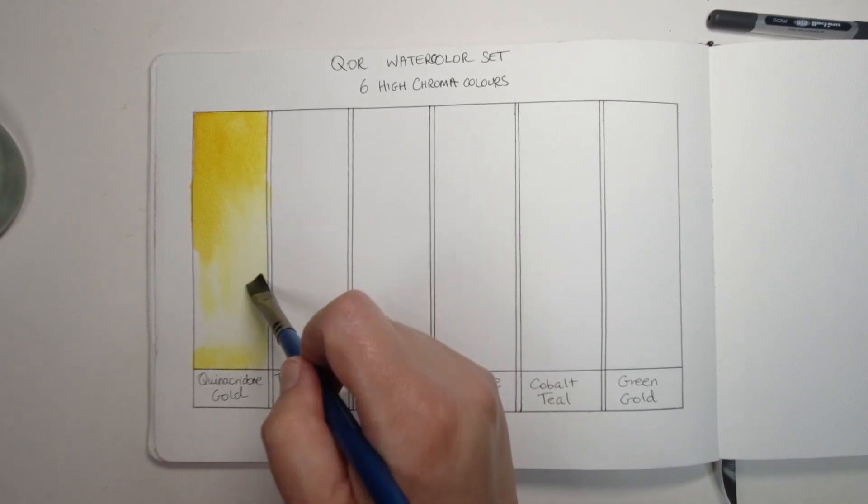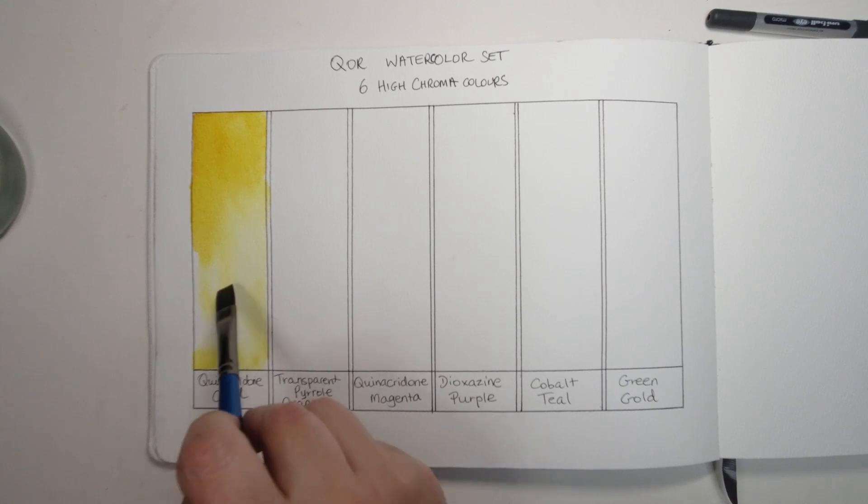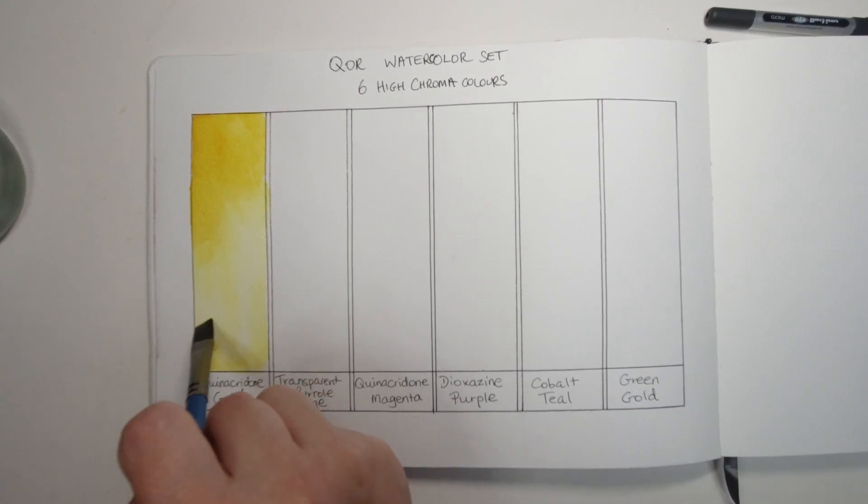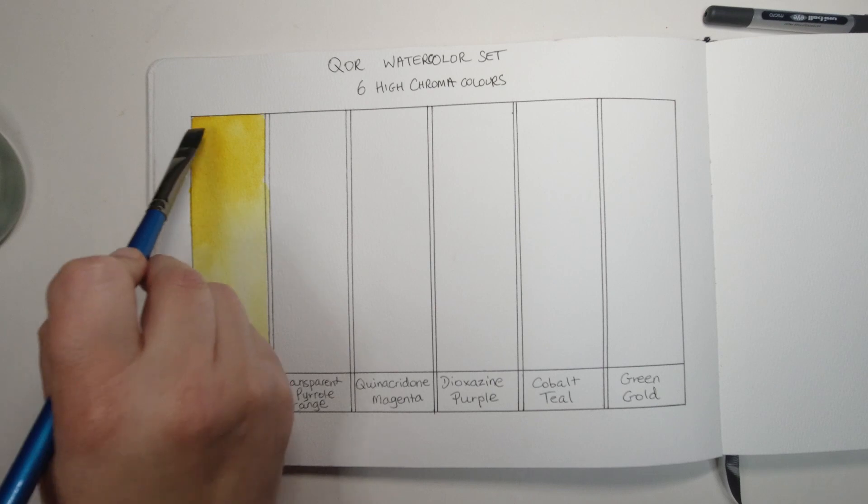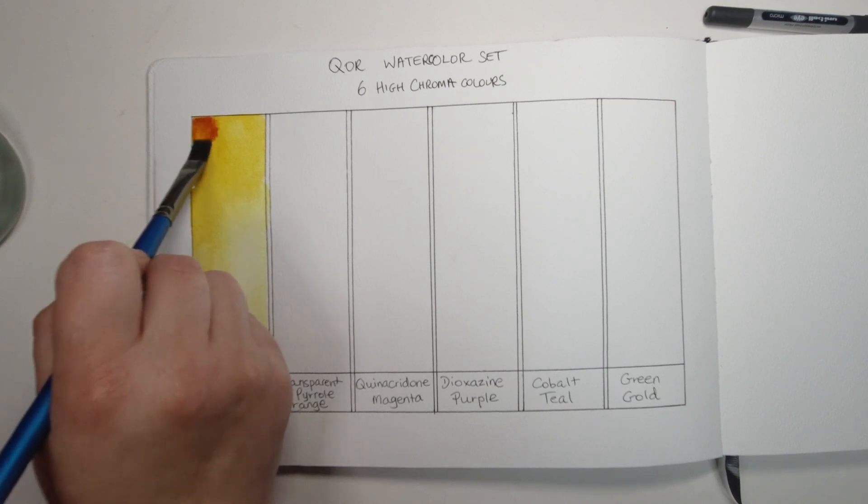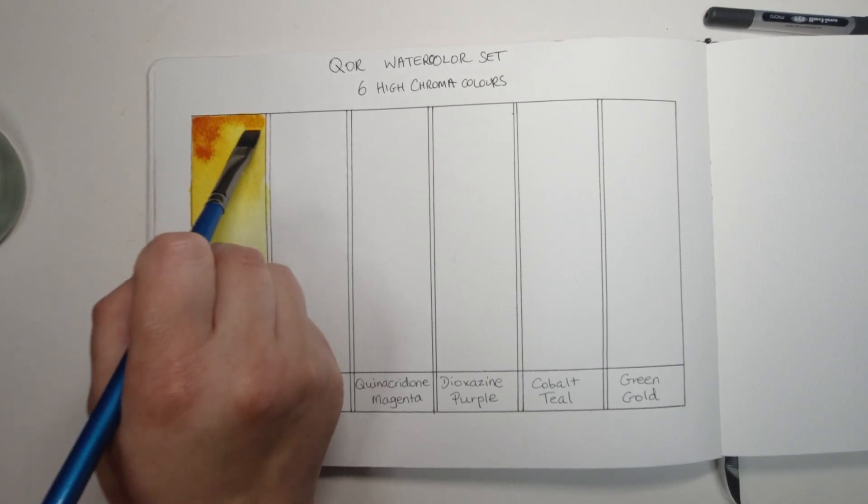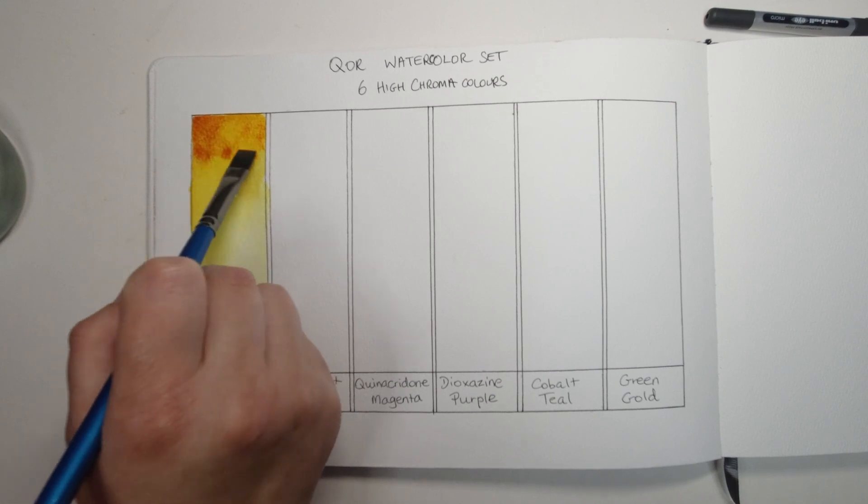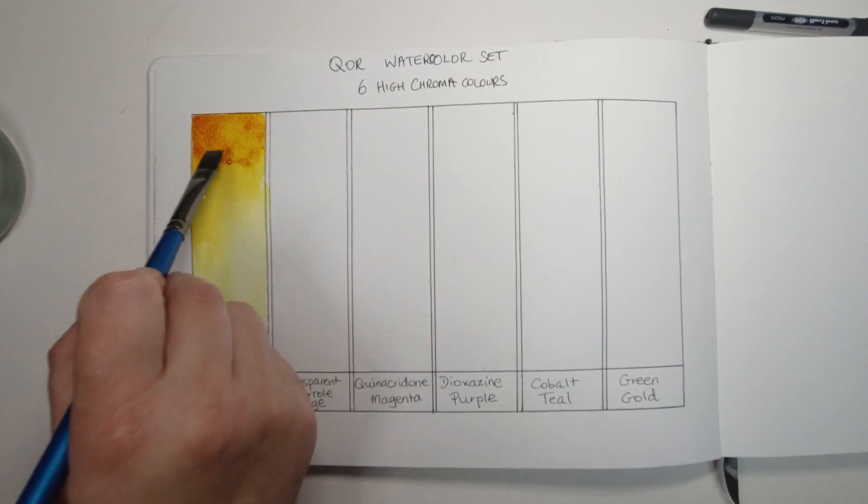And I'm just adding a bit more so you can really see that deep deep orangey gold color that you get in the mass tone. I really like this version of quinacridone gold.